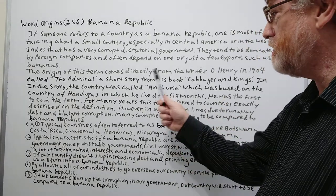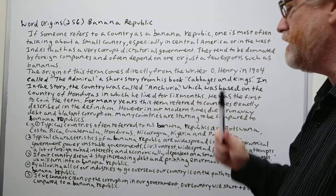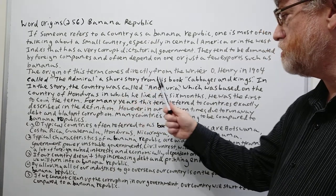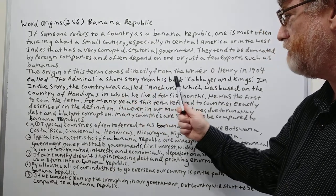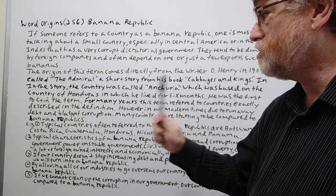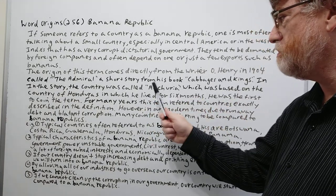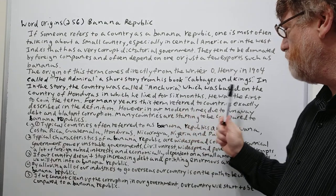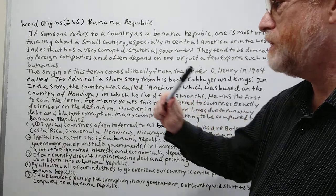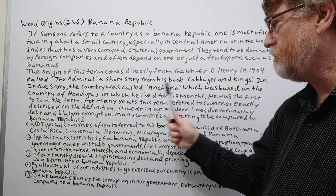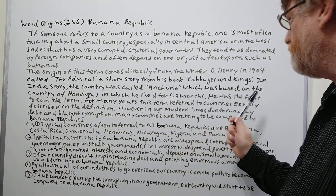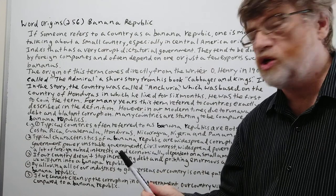The origin of this term comes directly from the writer O. Henry in 1904, in a short story called 'The Admiral' from his book Cabbages and Kings. In the story, the country was called Anchuria, which was based on the country Honduras, in which he lived for six months. He was the first to coin the term.